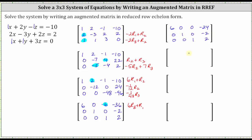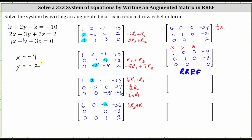Row two and row three remain the same. We have one more step — we need a one in row one column one. Let's replace row one with one-sixth times row one: one-sixth times six is one; one-sixth times zero is zero; one-sixth times negative twenty-four is negative four. Row two and row three remain the same. We now have the augmented matrix in reduced row echelon form with one solution. The first column gives x, the second gives y, the third gives z. From the rows: x equals negative four, y equals negative two, z equals two. The solution as an ordered triple is (negative four, negative two, two).